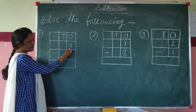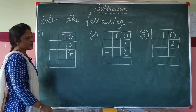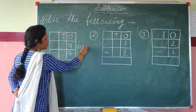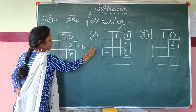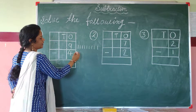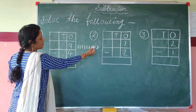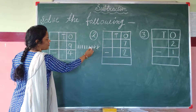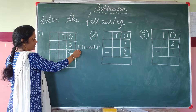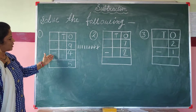This is number 9. This is number 4. We need to subtract 4 from 9. First we draw 9 lines: 1, 2, 3, 4, 5, 6, 7, 8, 9. We need to subtract 4 from 9, so we remove 4 lines: 1, 2, 3, 4. Children, we have cut 4 lines. How many lines are left? 1, 2, 3, 4, 5. We write 5 at the 1's place. When we subtract 4 from 9, the answer is 5.